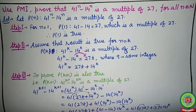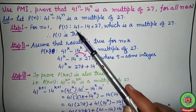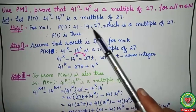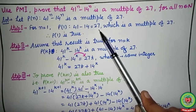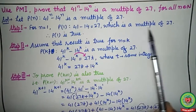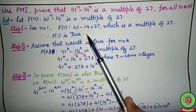First, check for n = 1. Here there is no left hand side or right hand side as such; we simply substitute: 41^1 − 14^1 = 27. Since 27 is the first multiple of 27, the result is true for n = 1.